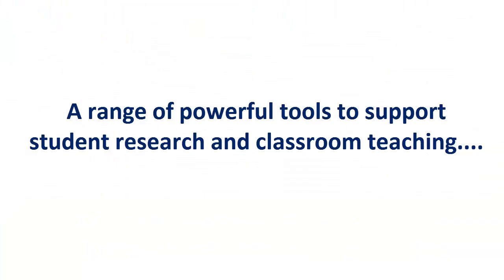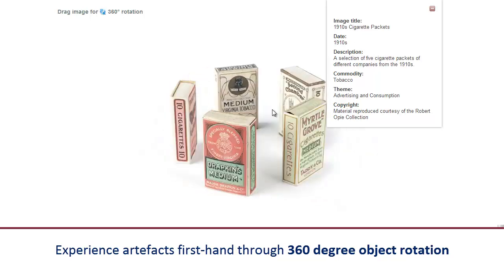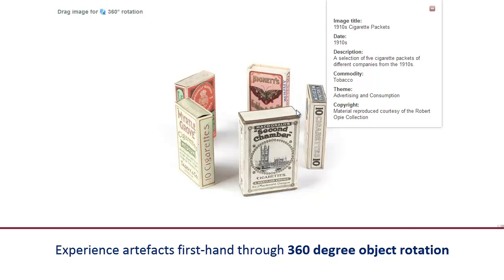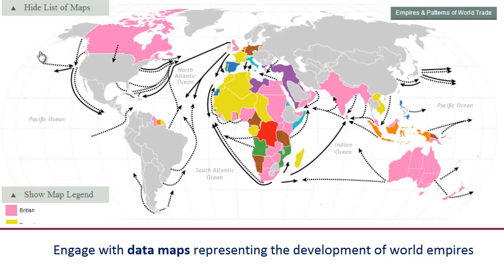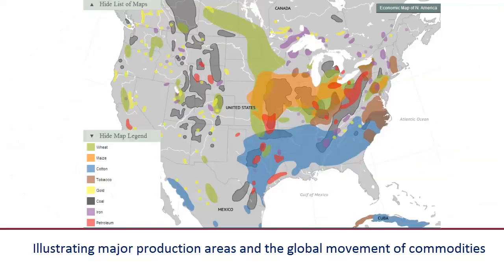Engage with a range of powerful tools to support student research and classroom teaching. An innovative rotation viewer enables up-close handling of raw materials and everyday objects. Interactive data maps representing the development of world empires are excellent resources for geographic-specific studies. These demonstrate routes of discovery, major production areas, the global movement of commodities, and the commercial growth of nations.